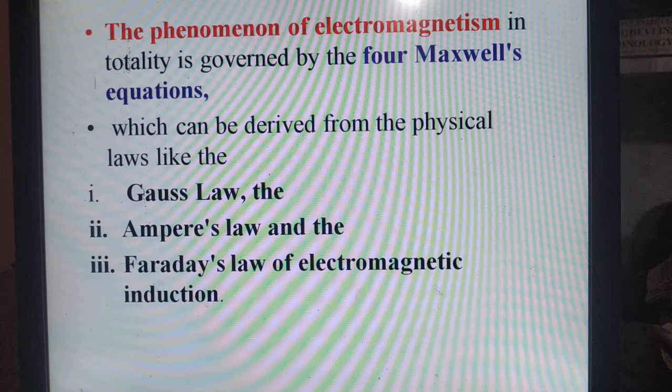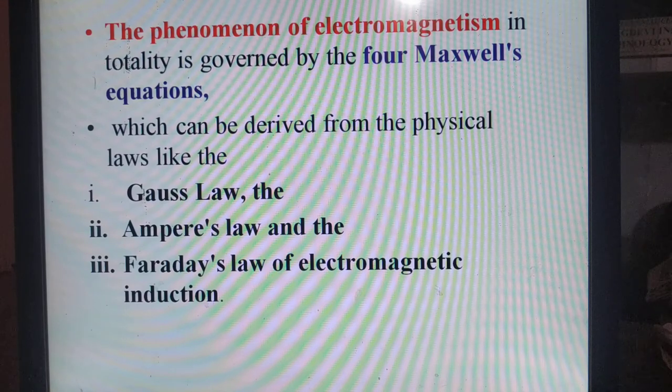The phenomena of electromagnetism in totality is governed by four Maxwell's equations, which can be derived from the physical laws like Gauss law, Ampere's law, Faraday's law of electromagnetic induction discussed in previous classes.